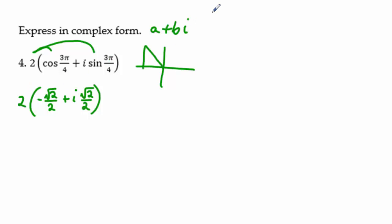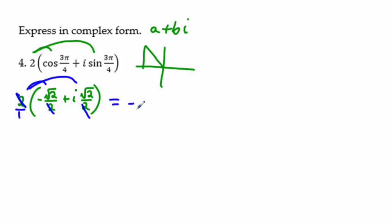Then we distribute the 2. Since 2 over 1 times √2/2 cancels the 2's in both terms, we get −√2 + i√2 for our answer.